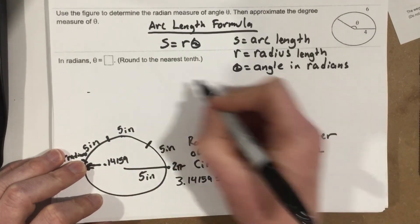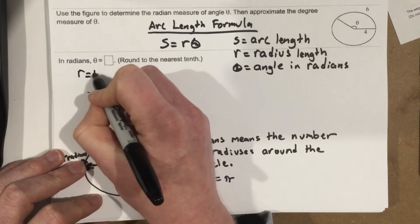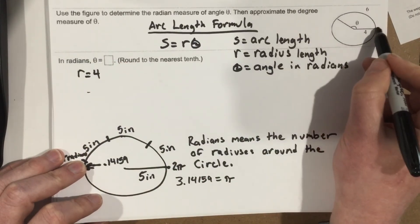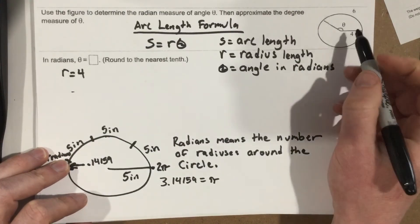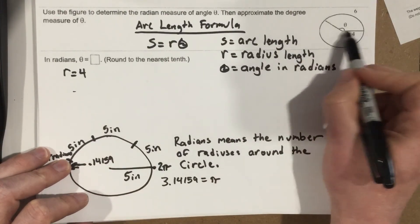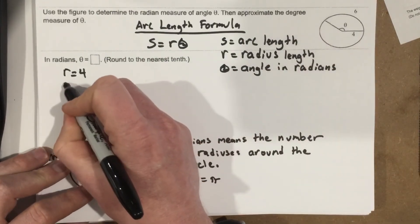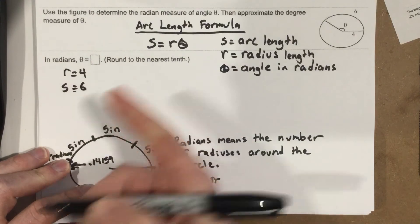They give you a radius, which is 4. So we know R equals 4. And they give you the arc length. They say from right here to right here, that's 6. So R is 4, radius is 4, arc length is 6. So we can say that S equals 6. Let's plug that in.